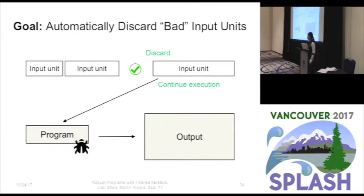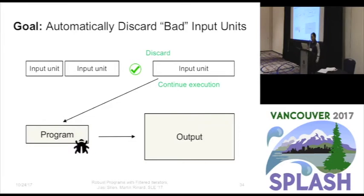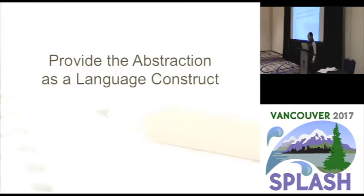Here's the idea: we propose a new programming abstraction to help the program automatically discard bad input units and continue execution to produce valuable results. We decided to provide the abstraction as a new language construct so that developers can use it at a higher level. Note that it is definitely possible to implement it just as a library or as a software design pattern — as long as it is provided as an abstraction, it works.